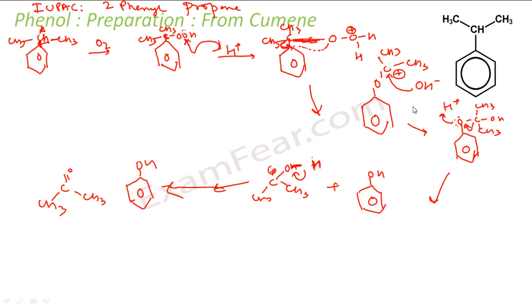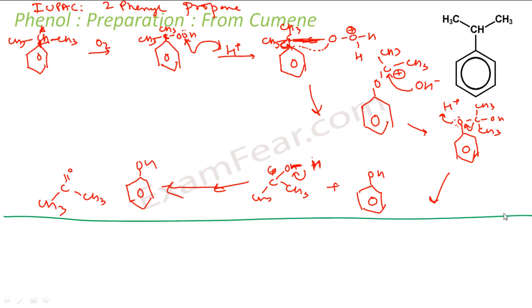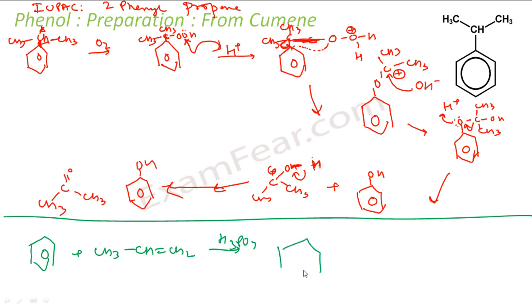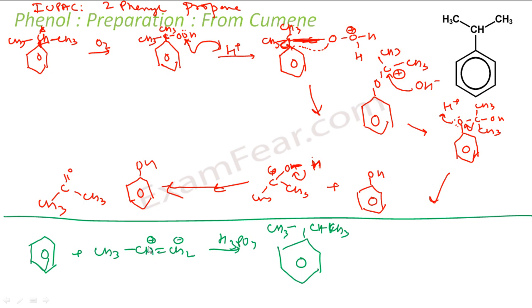Now the question is how to get cumene. You can take benzene and add propene in the presence of an acid catalyst such as H₃PO₄. This will give you cumene — Ph–CH(CH₃)₂. Propene forms a carbocation according to Markovnikov's rule, which attaches to benzene, hydrogen is kicked out, and cumene is formed. It's a pretty easy reaction.